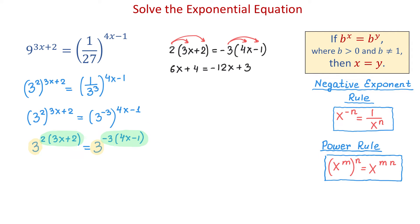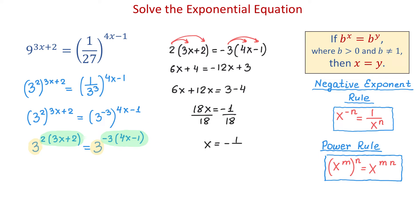Now, to isolate x on the left side, I will add 12x to the left and subtract 4 from the right. Then I will have 6x plus 12x equals 3 minus 4. Then 18x equals negative 1. And if we divide both sides by 18, we get x equals negative 1 over 18. So we found the solution to this exponential equation, and the solution is negative 1 over 18.